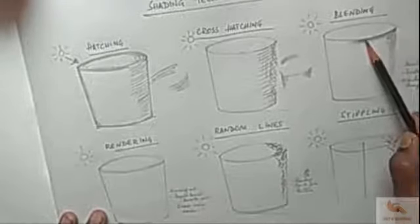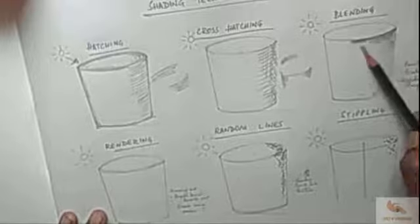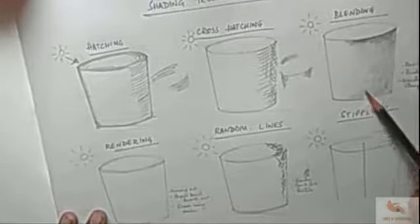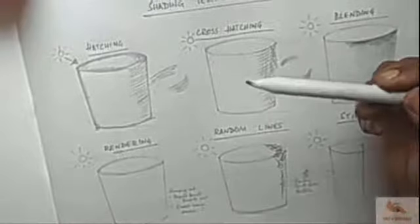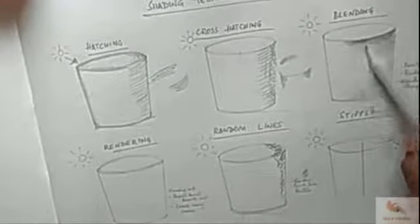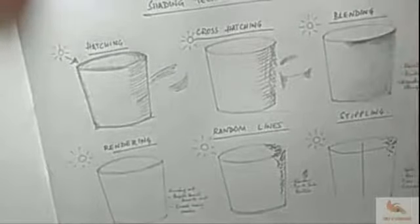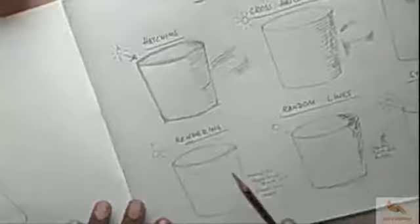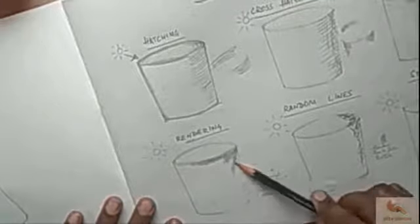It is called cross-hatching. Blending: the medium is applied with various pressure or by other means of spreading, such as tissues, earbuds, or blending stumps. It creates smooth gradation. Rendering: when some areas are erased to show highlights.